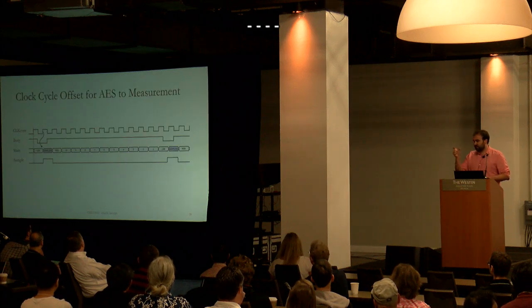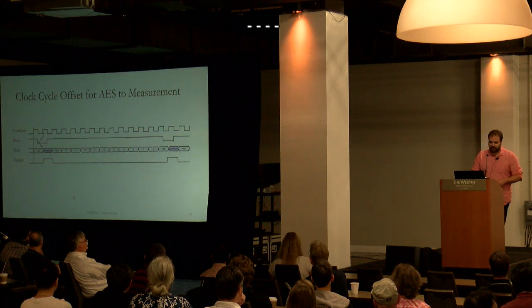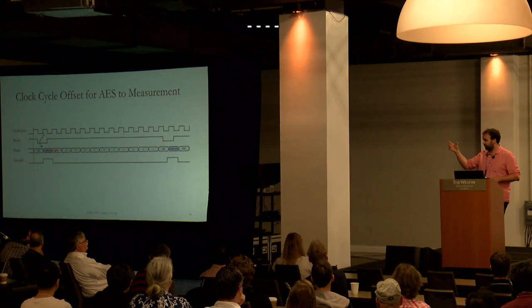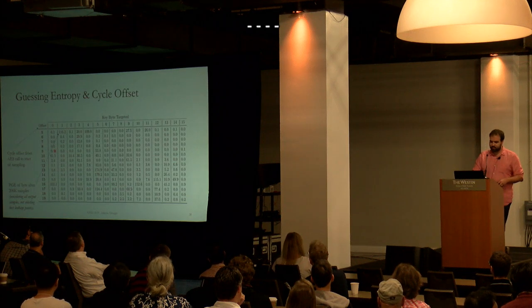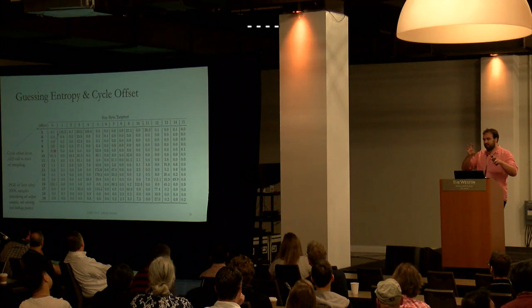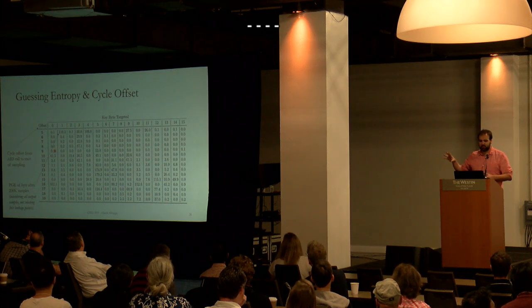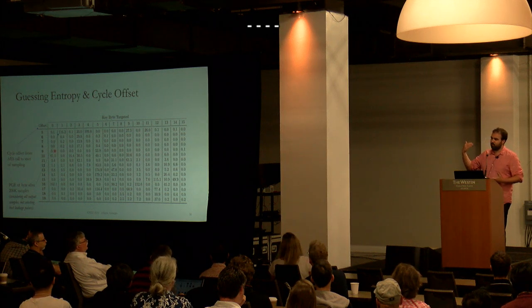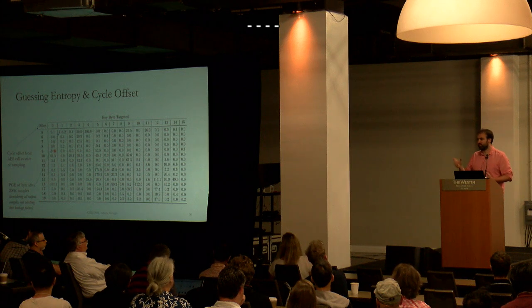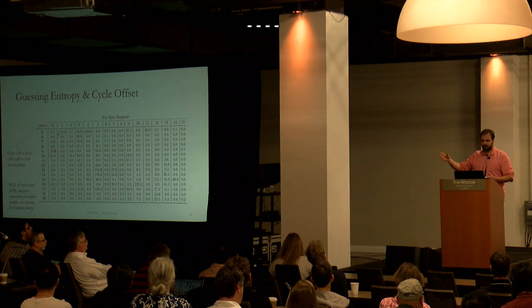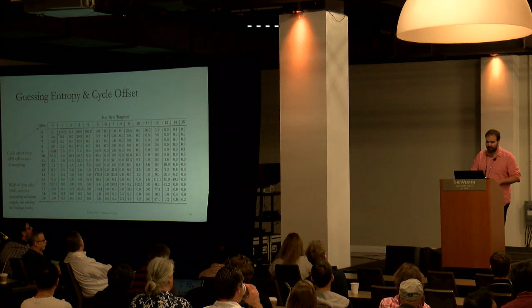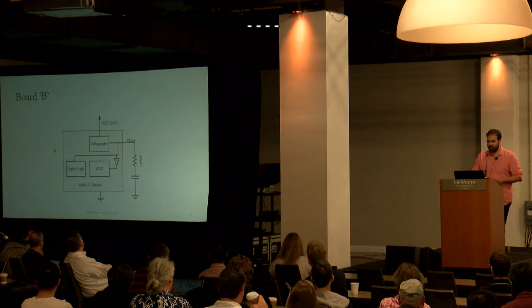We also investigated a cycle offset hypothesis: taking every 1-in-26 samples and shifting that window through the clock cycle. As we move it through, some adjustments appear in which bytes are recovered, but ultimately it didn't make sense. You're better off recording 400,000 traces at one offset than splitting 200,000 at one offset and 200,000 at another.